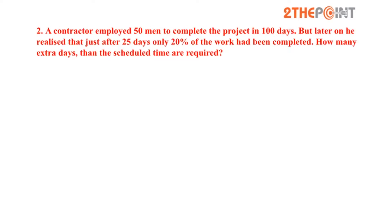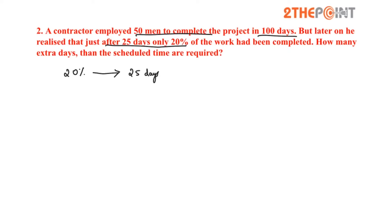A contractor employed 15 men to complete a project in 100 days. But later he realized that just after 25 days only 20 percent of the work has been completed. How many extra days than the scheduled time are required? It is given that 20 percent of the work is done in 25 days, so how many days does it require to complete 100 percent of the work?